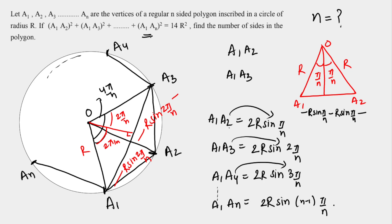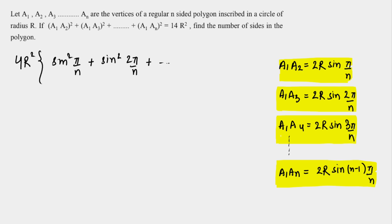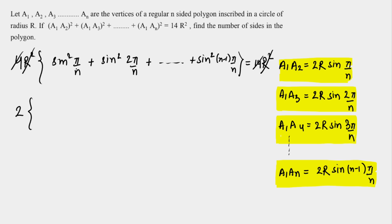Now I substitute all the chord lengths into the equation. We get 4R² multiplied by [sin²(π/n) + sin²(2π/n) + ... + sin²((n−1)π/n)] = 14R². The R² terms cancel, leaving the sine squared series equal to 14/4 = 7/2, so after dividing by 2 we need the series equal to 7/2.